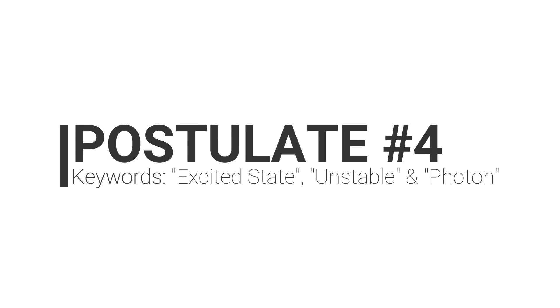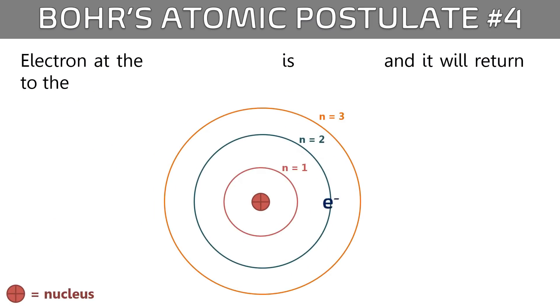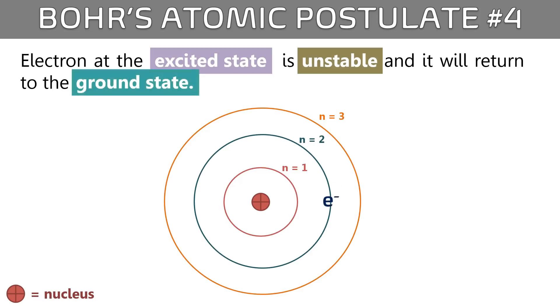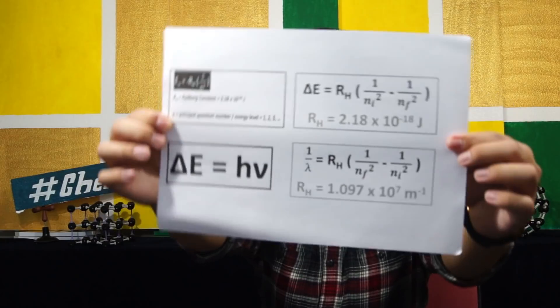Now, pay attention on the electron at N equals to 2. This electron is at the excited state. It is unstable, and therefore, it will return to the ground state. When the electron drops from higher energy level to a lower energy level, energy will be emitted in a form of photon.